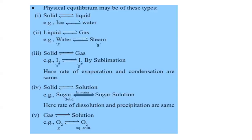Examples of substances that undergo sublimation include solid room fresheners — once placed in a room they keep emitting fragrance until they evaporate into the air. We also have solid in solution, like sugar dissolving in water to give a sugar solution — also a physical equilibrium. And gas in solution, such as oxygen gas dissolving in a solution to give aqueous oxygen.